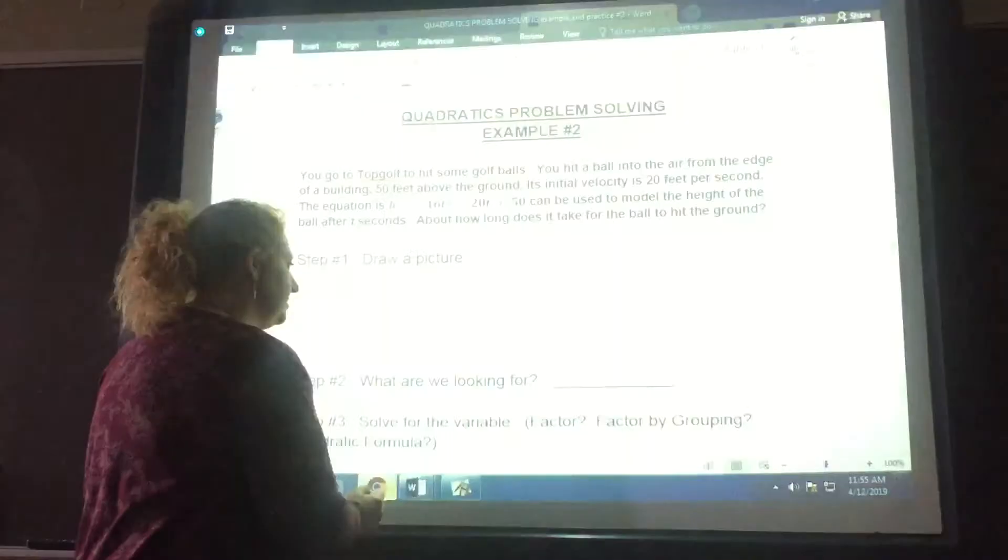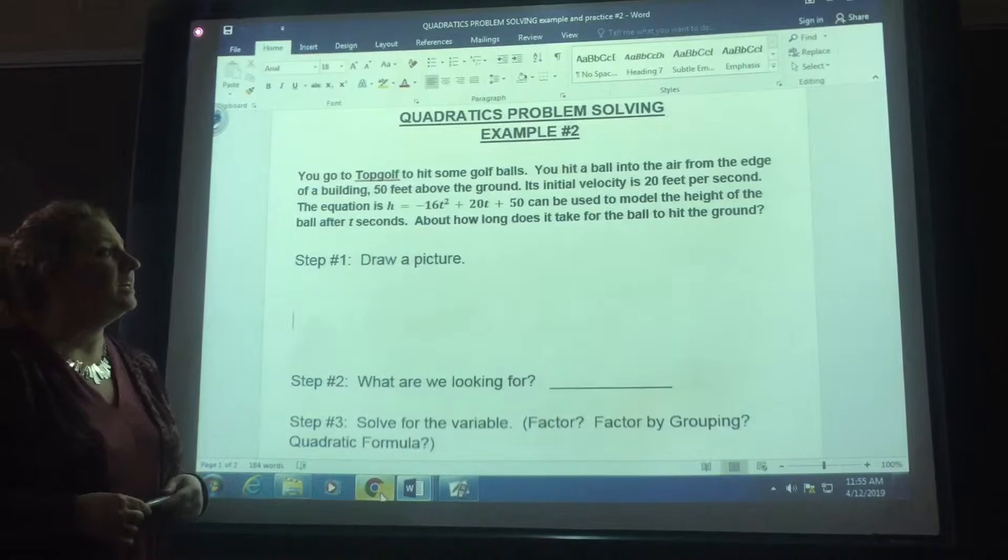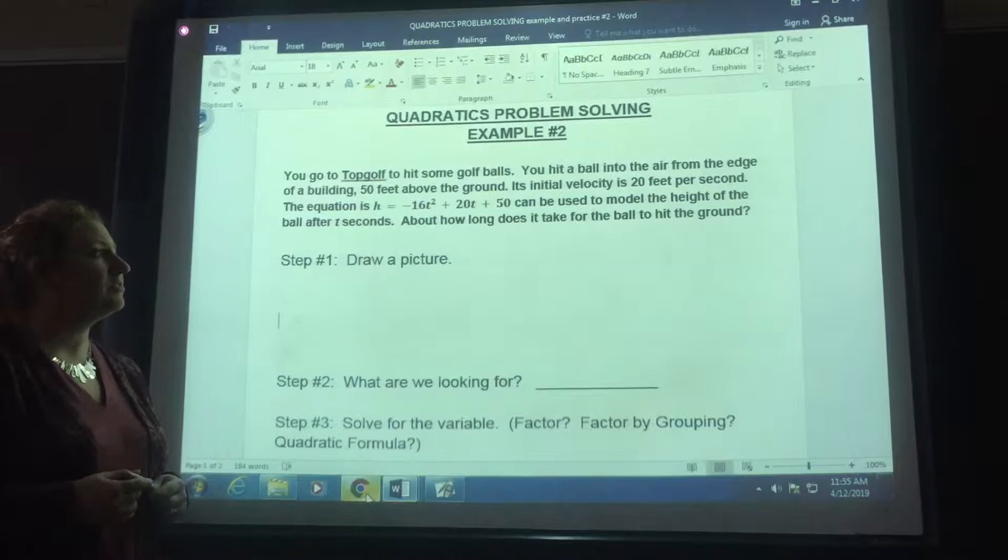So in example number two, we said if you go to Topgolf to hit some golf balls, you hit a ball into the air from the edge of a building 50 feet above the ground. Its initial velocity is 20 feet per second. The equation h equals negative 16t squared plus 20t plus 50 can be used to model the height of the ball after t seconds. After how long does it take for the ball to hit the ground?